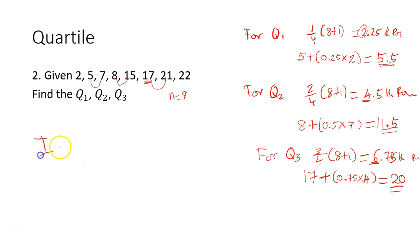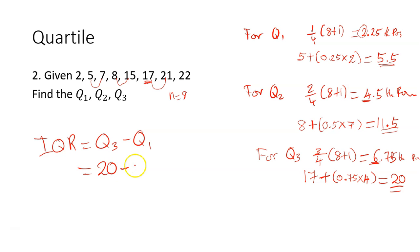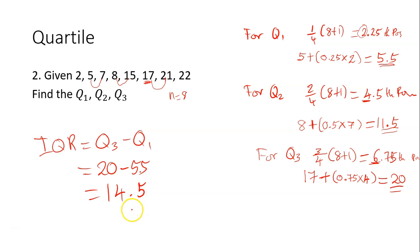The interquartile range is Q3 − Q1 = 20 − 5.5 = 14.5. So the IQR is 14.5. Now let's move on to percentiles.